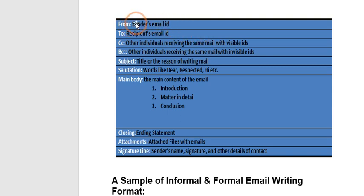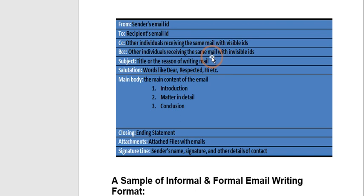First is 'From' — you will draw a box. The first line will be 'From', that is your sender's email ID — the person who is writing the mail. Then 'To' — the recipient's email ID, the person to whom you are sending the mail. Then CC — other individuals receiving the same mail — and BCC — other individuals receiving the same mail with invisible IDs. For CC and BCC just write the labels and leave them blank. But the email IDs in From and To should be mentioned — that is very important.